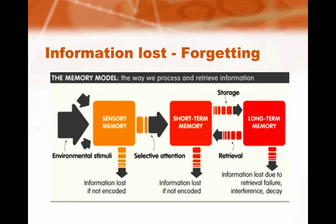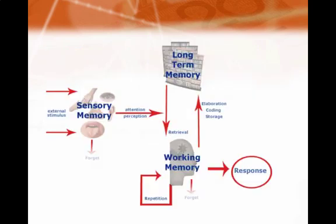In the context of information processing theory, forgetting is a very important element. Forgetting may take place in sensory memory due to lack of attention, in short-term memory if we fail to encode information, and in long-term memory due to retrieval failure or even incorrect encoding.